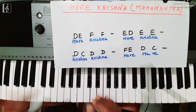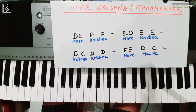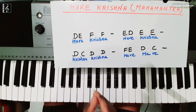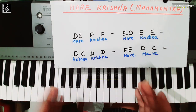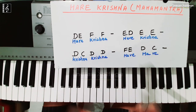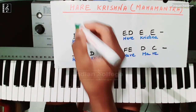ठीक है, now हम लोग चलते हैं chords की तरफ। Chords में हम लोग three chords use करने वाले हैं जो C major scale के three major chords हैं — जो last video में हमने सीखा था। ये हैं: tonic, dominant और sub-dominant। पहला chord है C major।